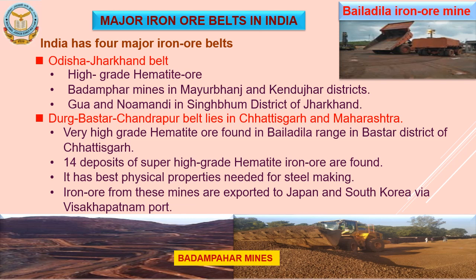The second belt, Durg-Bastar-Chandrapur belt, lies in Chhattisgarh and Maharashtra. Very high-grade hematite ore is found in the famous Bailadila range of Bastar district of Chhattisgarh. This mountain range is named so because it resembles the hump of an ox. It comprises 14 deposits of super high-grade hematite iron ore with the best physical properties for steel making. Iron ore from these mines is exported to Japan and South Korea via Visakhapatnam port.